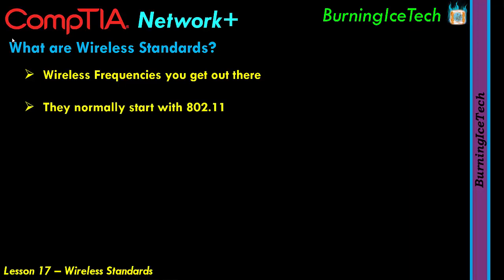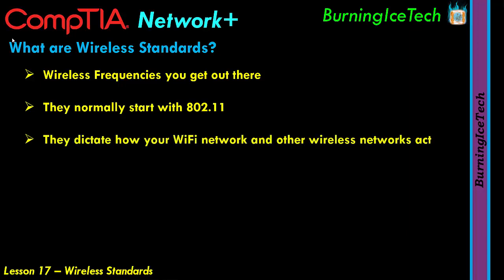Whenever we talk about a wireless frequency, it tends to start with the numbers 802.11 and then something after that — normally a letter of some kind. Whatever comes after the .11 tells us which frequency we're dealing with, indicated with a letter or two letters. In a nutshell, wireless standards are a set of services and protocols that dictate how your Wi-Fi network and other wireless networks actually act.